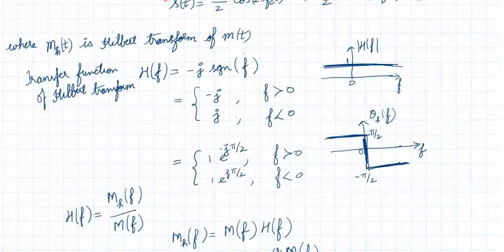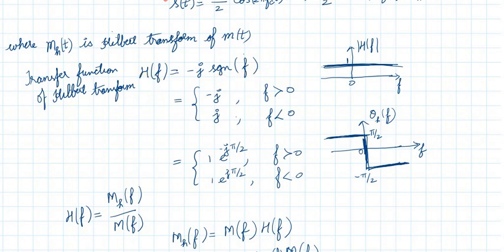mh(t) is obtained by passing m(t) through a transfer function H(f), where H(f) = −j·sgn(f). The signum function gives: sgn(f) = +1 for positive frequencies and −1 for negative frequencies. So for positive frequency, H(f) = −j, and for negative frequency, H(f) = +j.